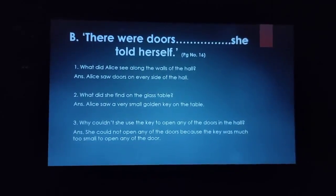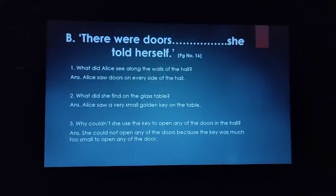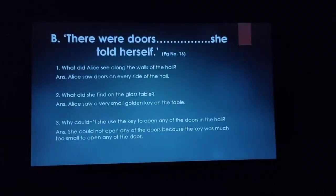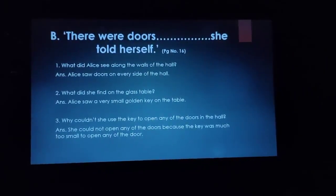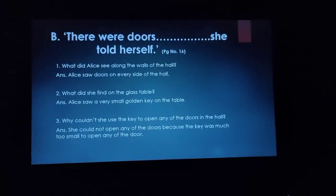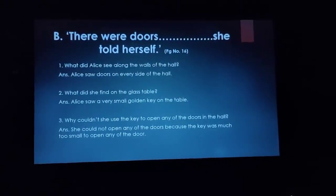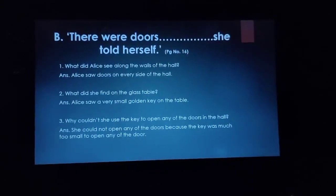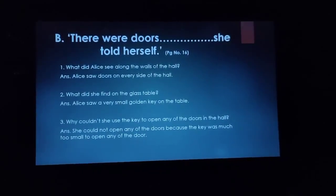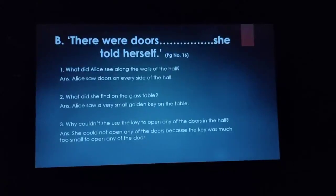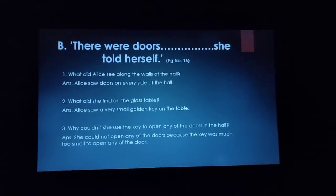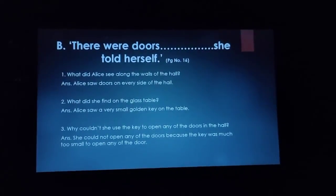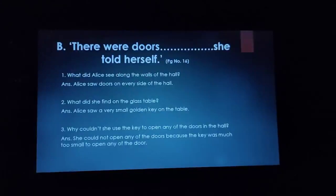Alice saw doors on every side of the hall. The second question is: what did she find on the glass table? The glass table which was placed in the hall — she saw that there was a golden key. So we will write: she saw a very small golden key on the table.